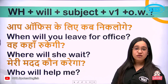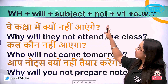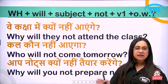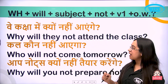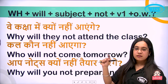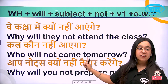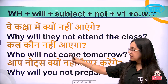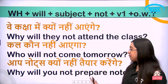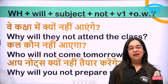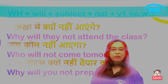We can also use WH-family questions in negatives. Start with WH word, then will, subject, not, first form, and other words. For example: 'Woh kaksha mein kyun nahi aayenge' — Why will they not attend the class? 'Kal kaun nahi aayega' — Who will not come tomorrow? Here, since who is the subject, we say: who will not come. 'Aap notes kyun nahi tayyar karenge' — Why will you not prepare the notes? That was will plus first form.